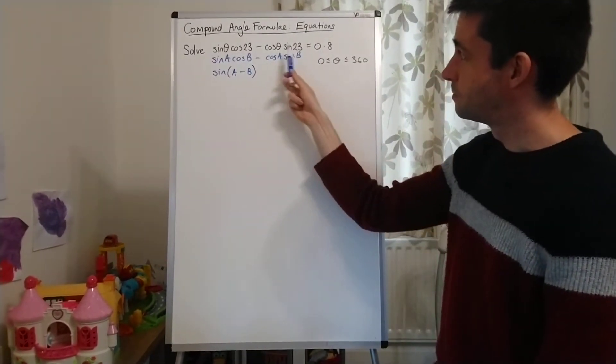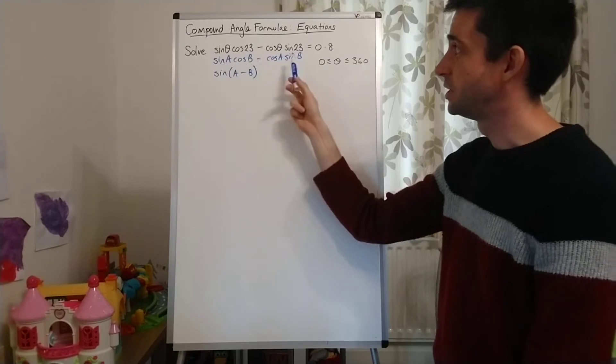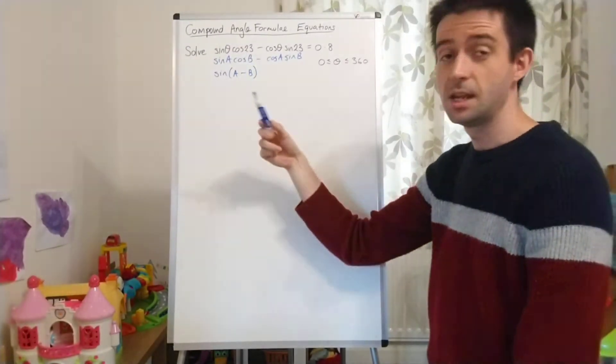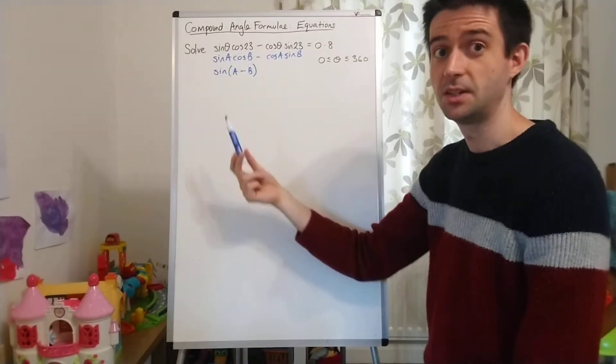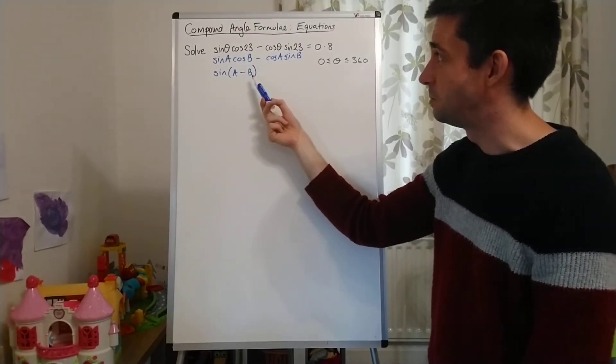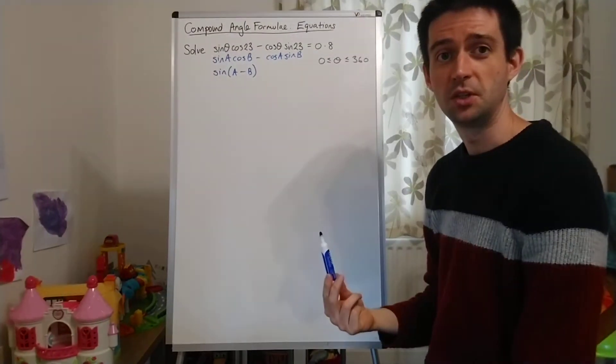So I've looked at the form of the equation, I've realised it's a compound angle identity, it's the sin compound angle identity, and I've realised that it's sin A minus B, because it's the minus in between the two terms.